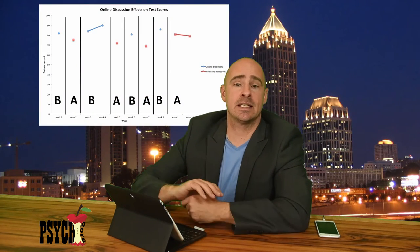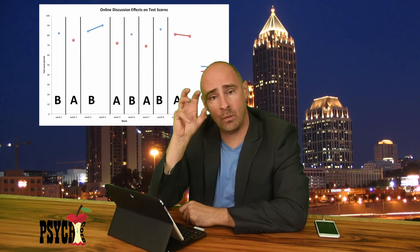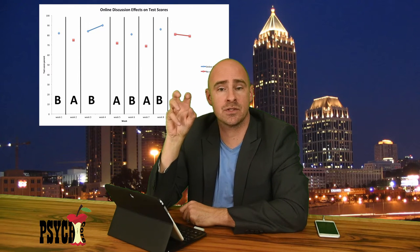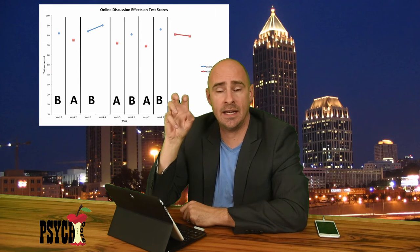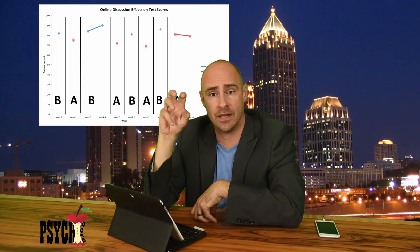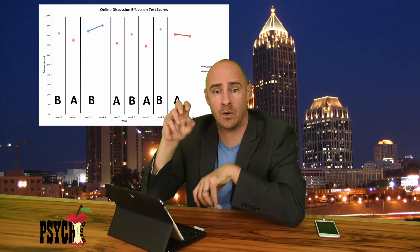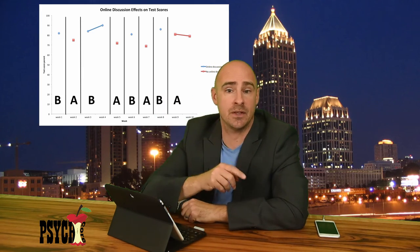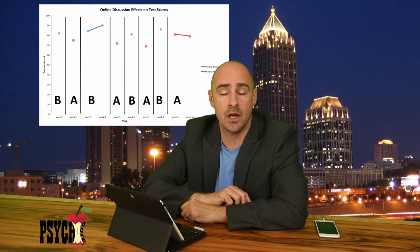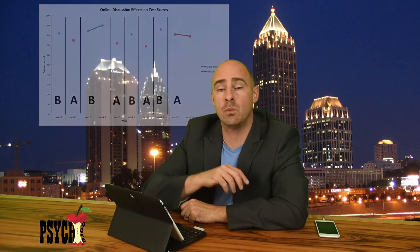An example of an alternating treatment design would be something I actually did in class one time, where one week students were required to answer some questions online, and the next week they were not, and the week after they were, and the week after they were not — alternating back and forth. I compared their test scores overall to see which one of those conditions produced better learning on their tests.